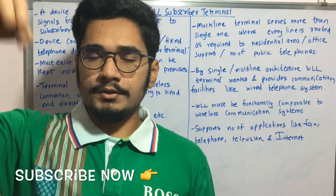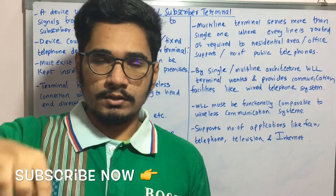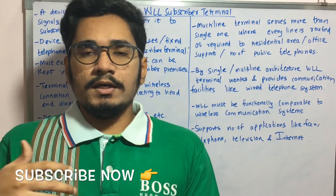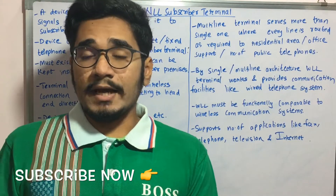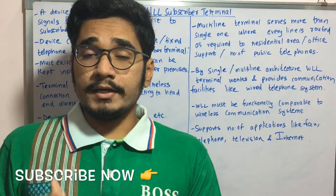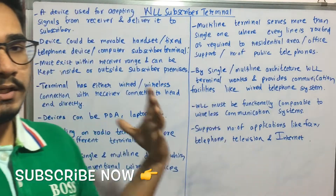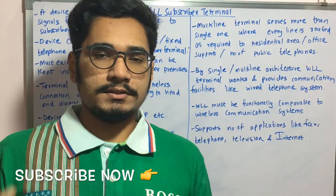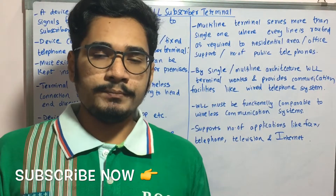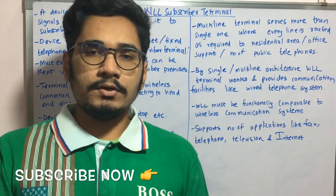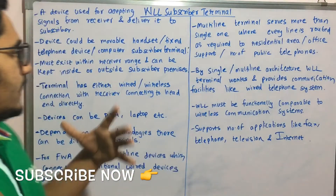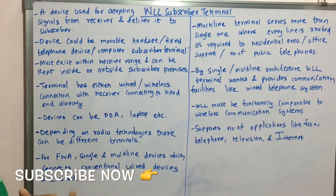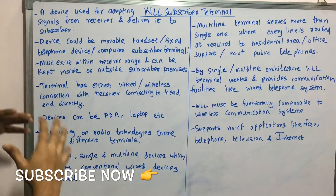You insert a one-rupee coin into that kind of device and make a call. That type of system is what is being described here — you can make a call within that particular range, which is the subscriber receiver range mentioned.